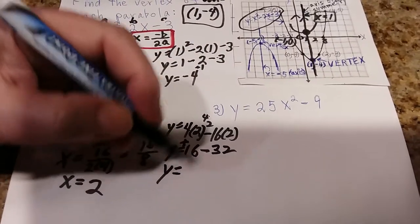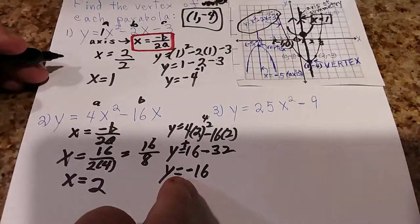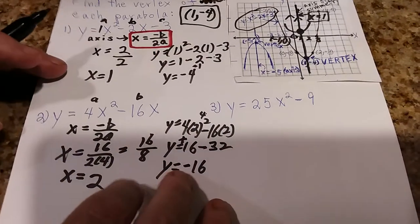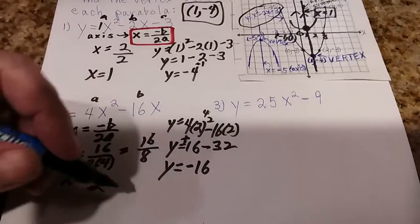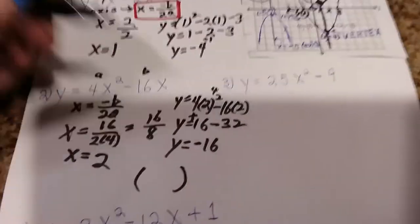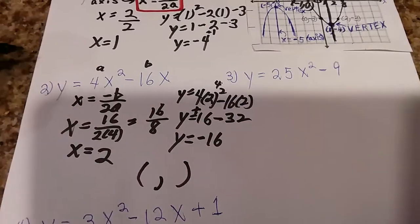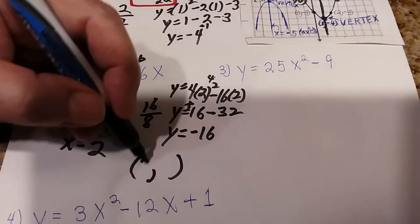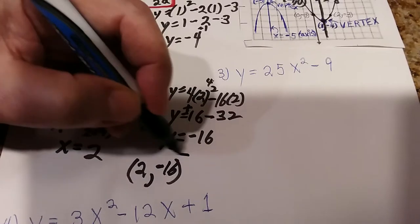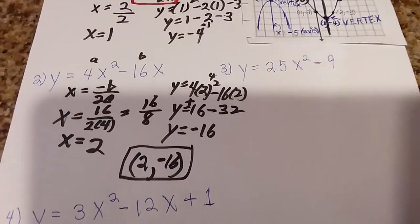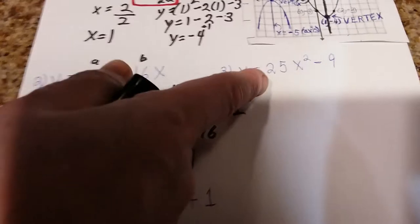Then 16 × 2 = 32. So we have 16 minus 32, which gives us -16. Don't stop there — you have to write the vertex as a coordinate with an x and a y: x is 2 and y is -16, so the vertex is (2, -16).